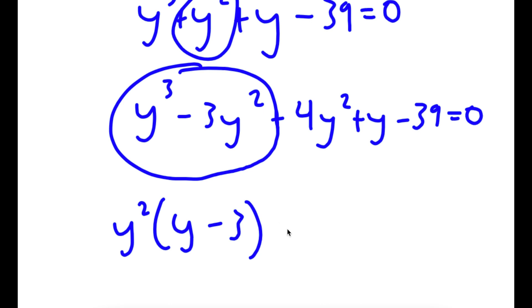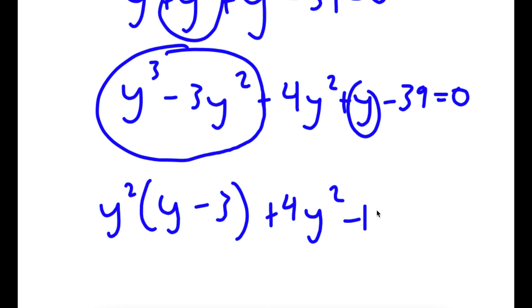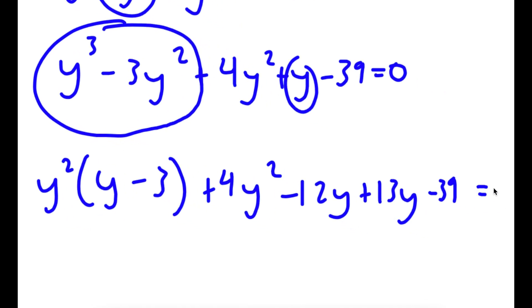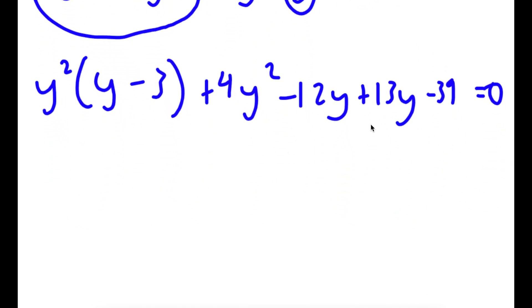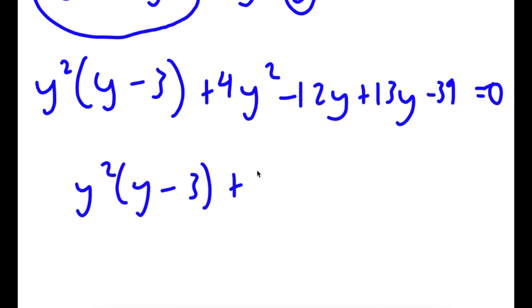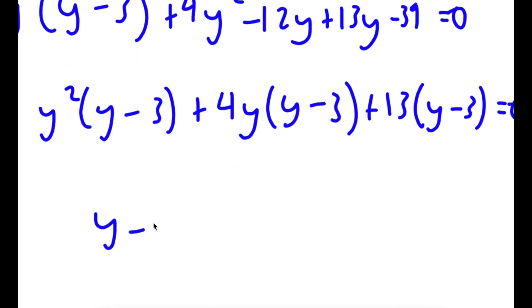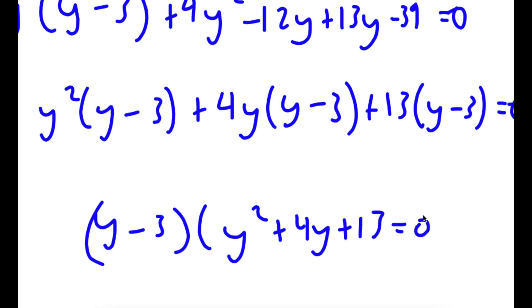Now I'm going to add 4y squared, and rewrite y here as negative 12y plus 13y. From 4y squared minus 12y, I can factor out 4y, giving 4y times y minus 3 plus 13 times y minus 3. This is equal to 0. So if I factor out y minus 3, I get y minus 3 times y squared plus 4y plus 13 is equal to 0.